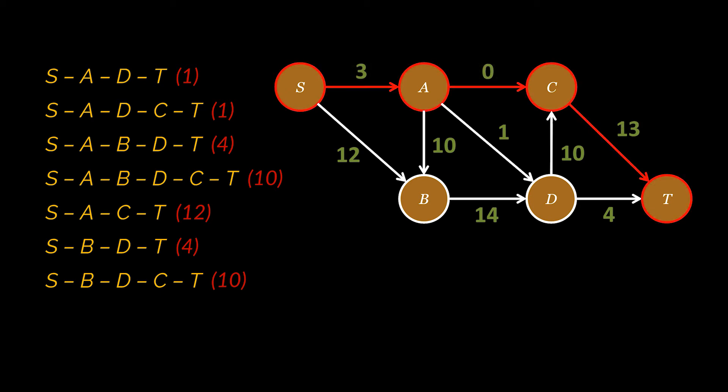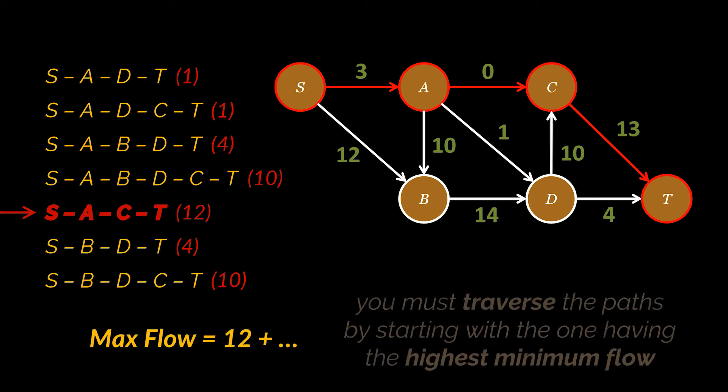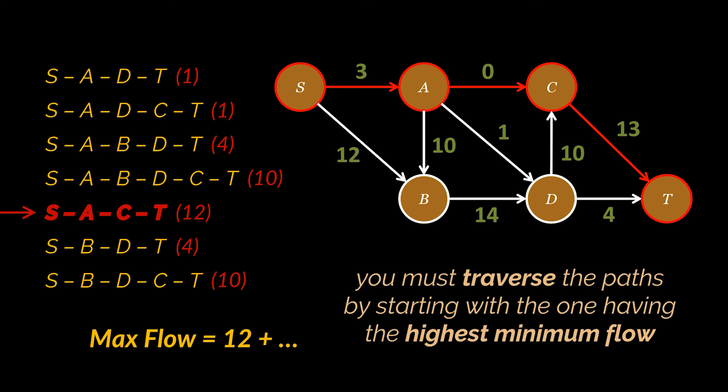We'll be subtracting this minimum from the path we're currently working with, so at some point this minimum will be zero. Don't worry, it's very similar to what we just did here. Take a look. This path for example has a minimum flow of 12, so we subtract the 12 from all the edge weights belonging to this path and add 12 to the max flow variable. We do this with all the paths we found until we have no paths left.